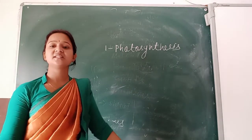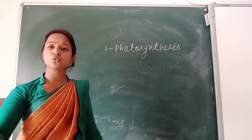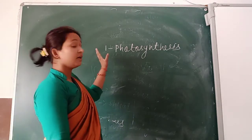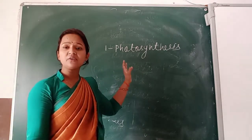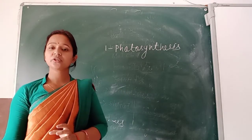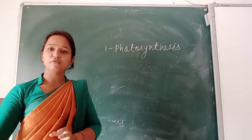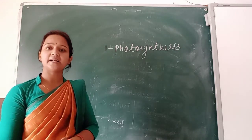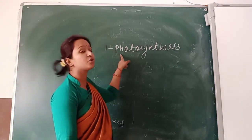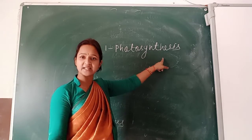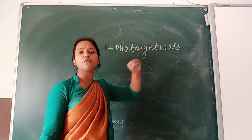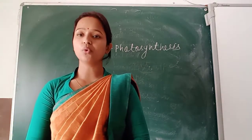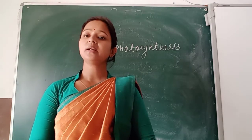Photo means light. Synthesis means to synthesize. So with the help of sunlight, air, and water, plants make their food. That process is called photosynthesis. By the process of photosynthesis, plants make their own food in the leaves.